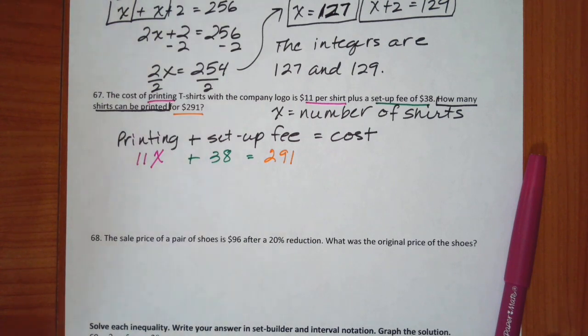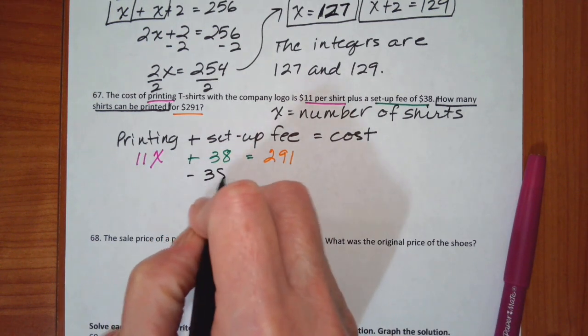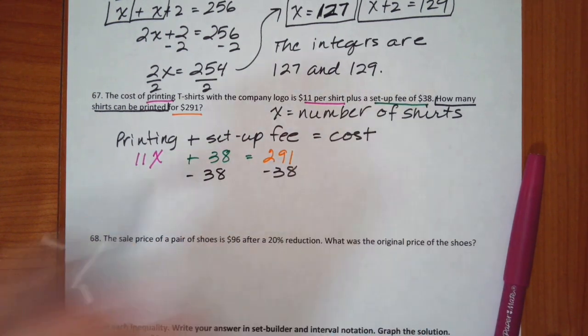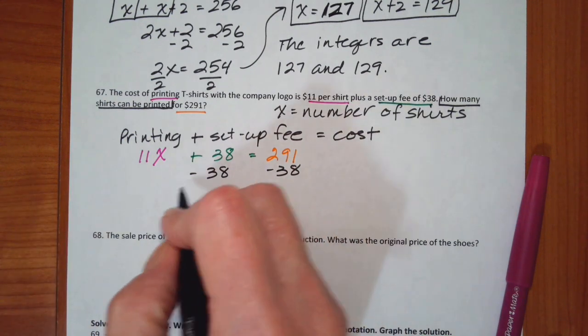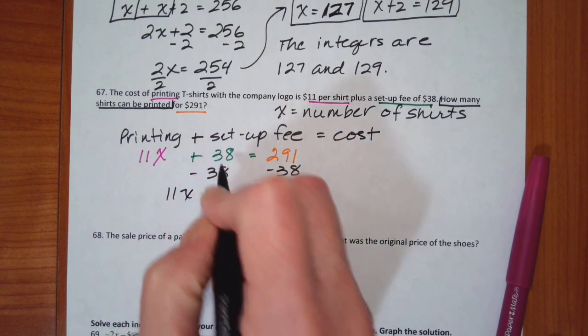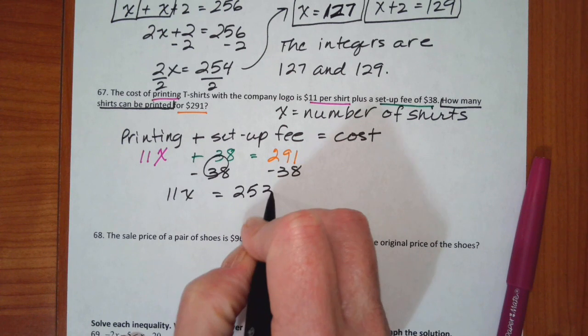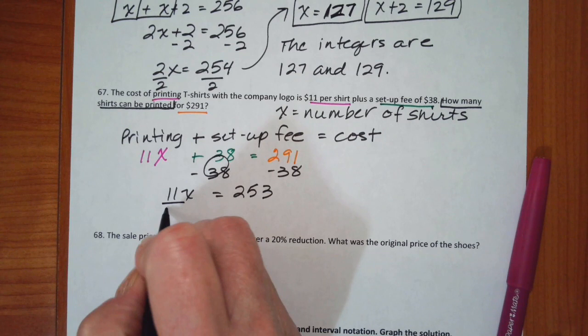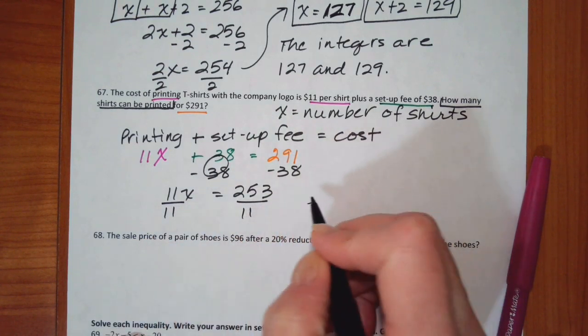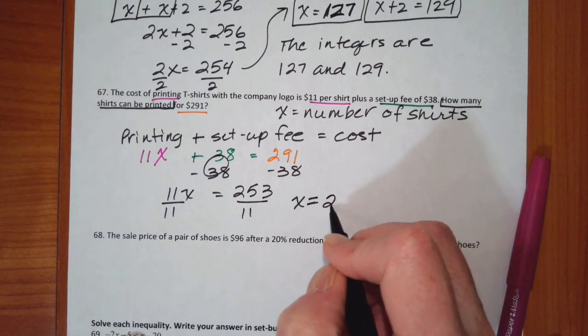So once I've got it set up it's fairly straightforward to solve. Okay, so I'm going to subtract $38 from both sides and I get 11x is equal to 253 and when I divide both sides by 11 I get that x is equal to 23.